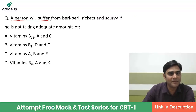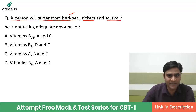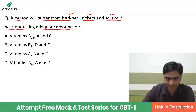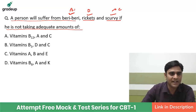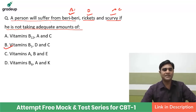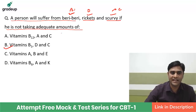A person will suffer from beriberi, rickets, and scurvy if he is not taking adequate amounts of which vitamins? The options are vitamin B12, A, C, B1, and D. Beriberi is caused by deficiency of B1, rickets by deficiency of D, and scurvy by deficiency of C. So the right option is vitamin B1, D, and C.